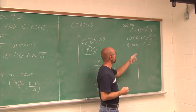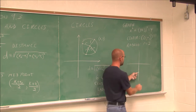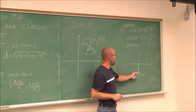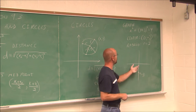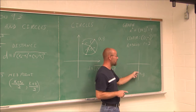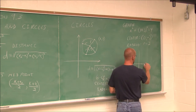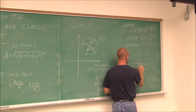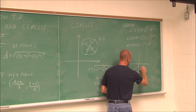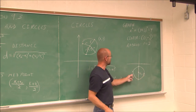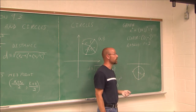Now I can graph this circle. Its center is (0, negative 3). I'll go two spots to the right, two spots up, two spots down, and two spots to the left from the center — those are all points on the circle. We have a circle with center (0, negative 3) and a radius of 2. From this center point to anywhere on the circle is going to be two units away.